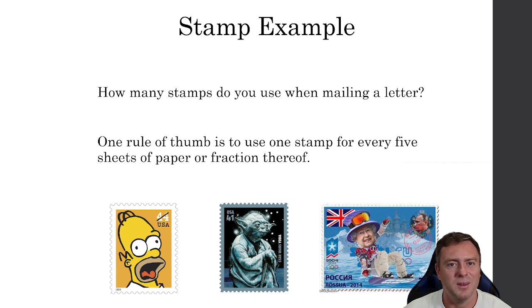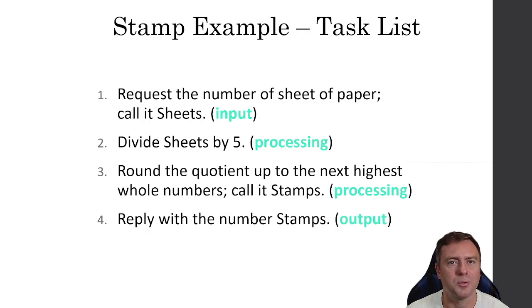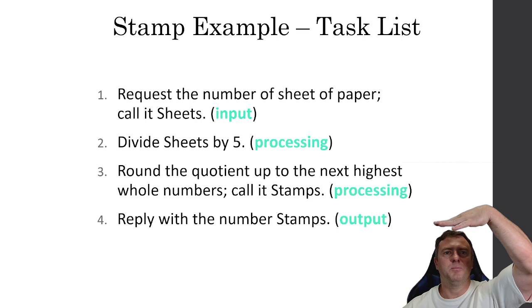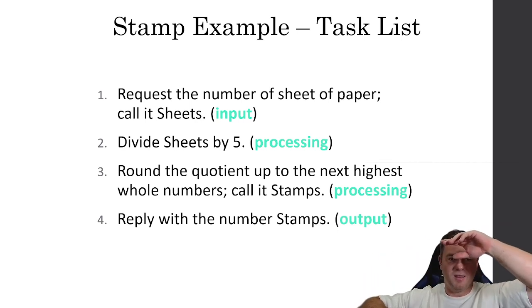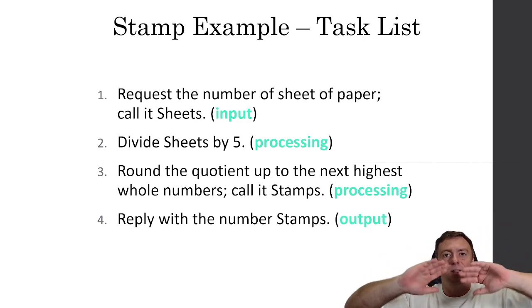Cool. So another thing to think about, I've got a little example here is how many stamps do you need when you mail a letter? Well, there's a rule of thumb that basically there's one stamp for every five sheets of paper or a fraction of thereof. So if we were to convert this into an algorithm, have a think pause the video and see if you can actually get that working.